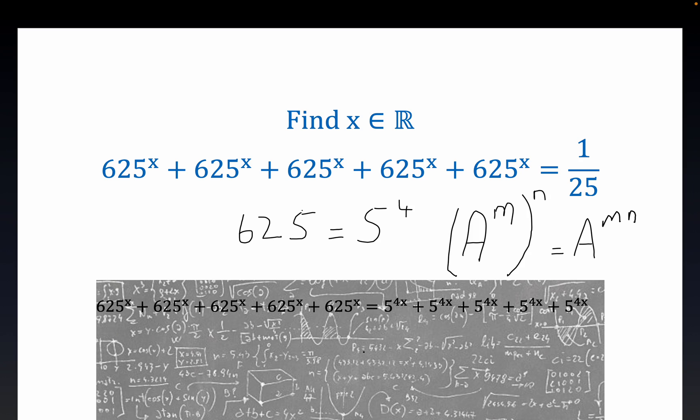Now the next trick that eludes some people, I know it did me the first time, you're better off just rewriting this as 5 times 5 to the 4x. And once again, this makes it amenable to a particular property of exponents, very well known property. It's a little easy to miss this though, in my opinion.